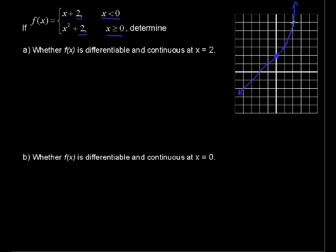Is the tangent line, because the derivative is the slope, the instantaneous slope. So is the tangent line coming in from the left, does that have the same slope as the tangent line coming in from the right? And the answer is yes, we can see it.